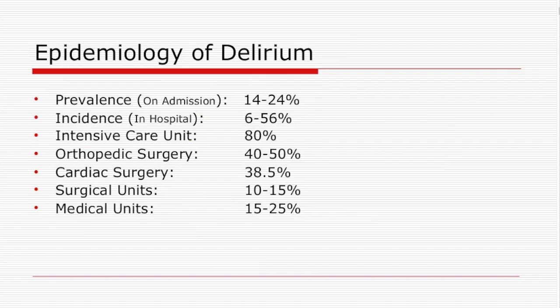A study published in the American Journal of Nursing in 2007 looked at the epidemiology of delirium in various hospital units. On admission, the rate varies from 14% to 24%. The incidence within the hospital ranges from 6% to 56%. The highest incidence is in the intensive care unit, as those patients are the sickest of all. It is followed by higher incidence in orthopedic surgery, then cardiothoracic, medical, and surgical units.